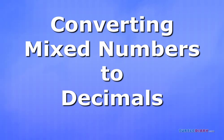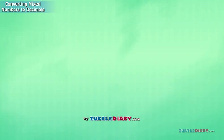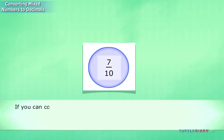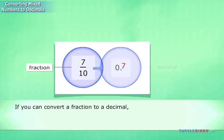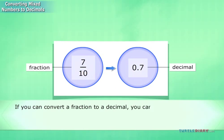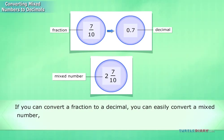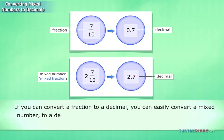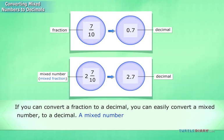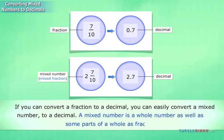Converting mixed numbers to decimals. If you can convert a fraction to a decimal, you can easily convert a mixed number, also called a mixed fraction, to a decimal. A mixed number is a whole number as well as some parts of a whole as a fraction.